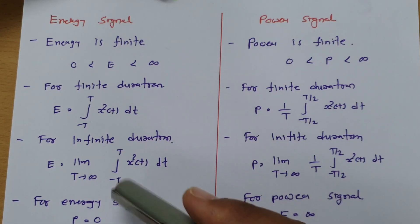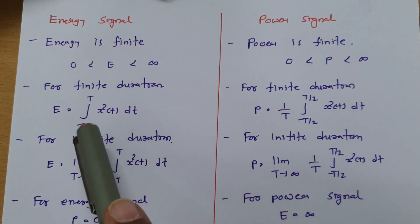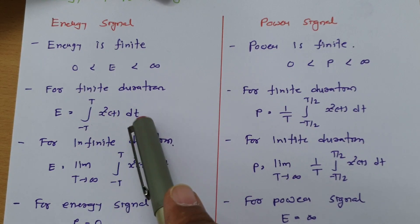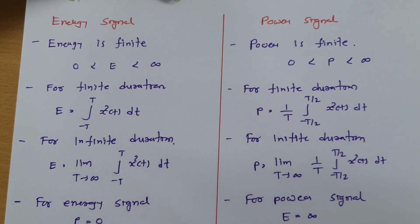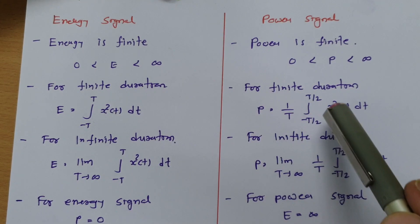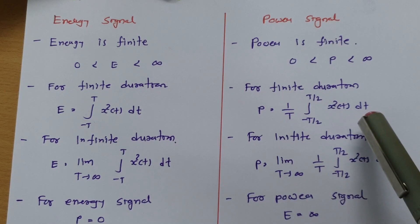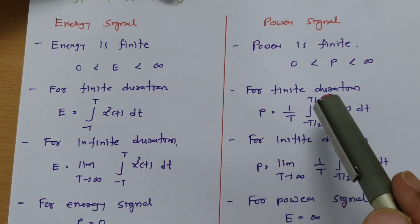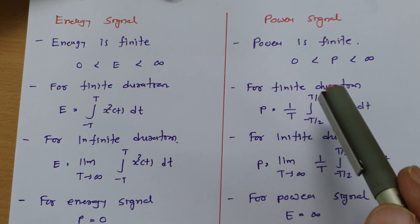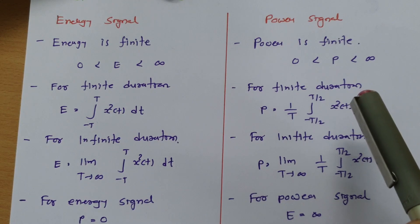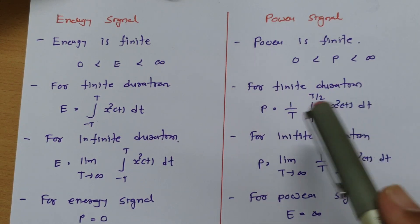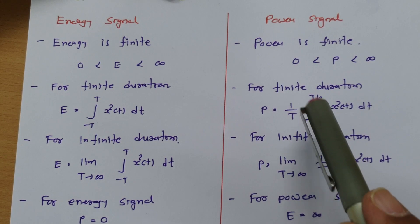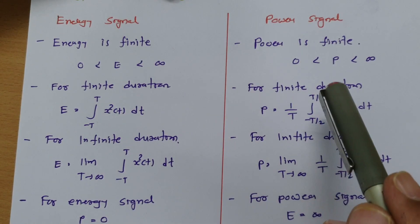For finite duration, energy can be calculated by the integral from minus T to T of x squared dt, where x is the signal. For finite duration, power can be calculated by (1/T) times the integral from minus T/2 to T/2 of x squared dt. In some books you will find the formula written as (1/2T) with integration limits from minus T to T — that is the difference you will find between books.